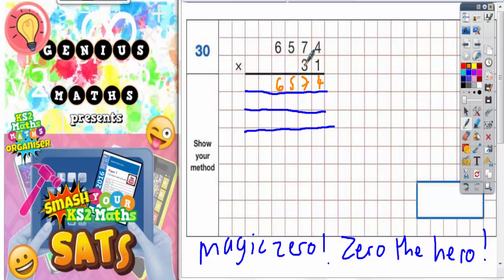Now we need to times everything by the three because the one we've done. But this three doesn't mean three. This three is in the tens place so it means thirty. So we're actually timesing everything by thirty.